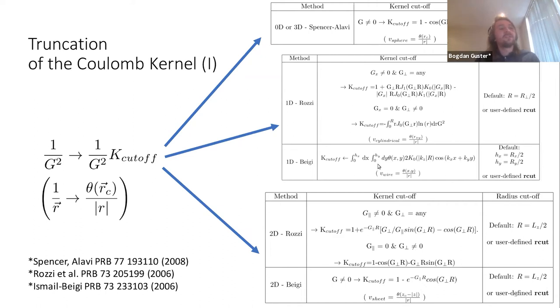For the Beigi case, you need to solve a quadrature. I'm not going to go into details about the formulas, but you need to solve a quadrature into a rectangular shaped cutoff which is very well taking into account the correct electrostatics of the physical picture you have.